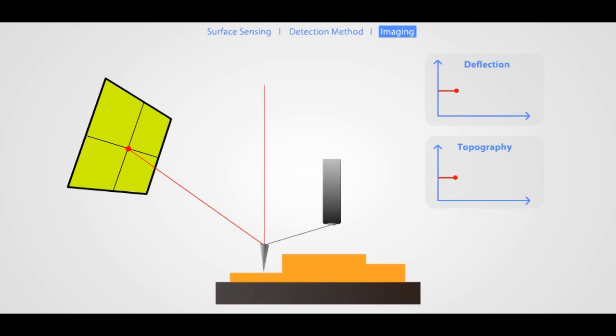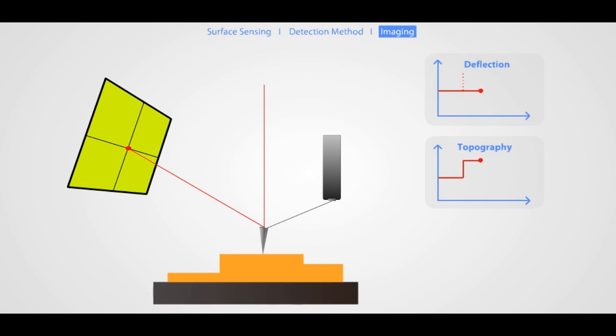AFM generates an accurate topographic map of the surface by using a feedback loop to control the height of the tip above the surface.